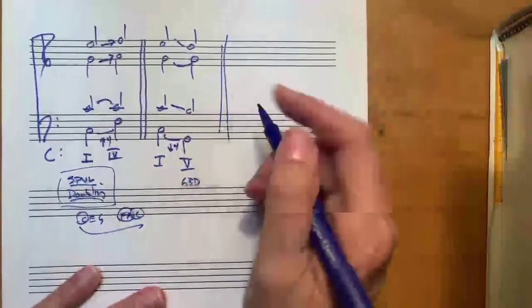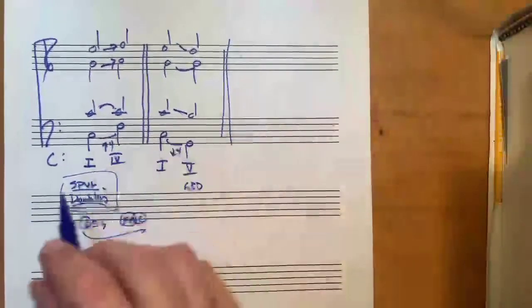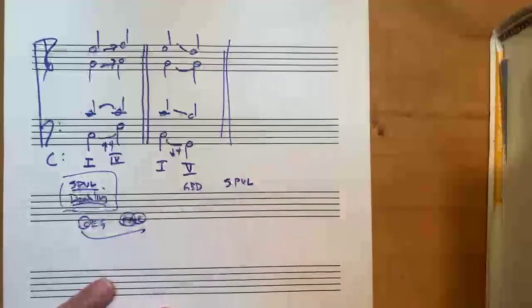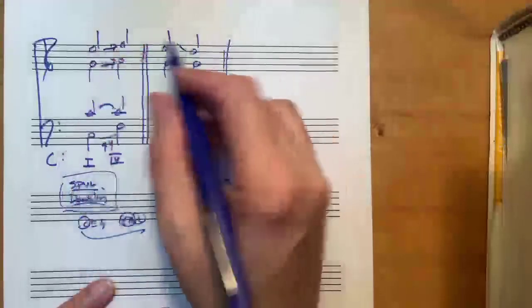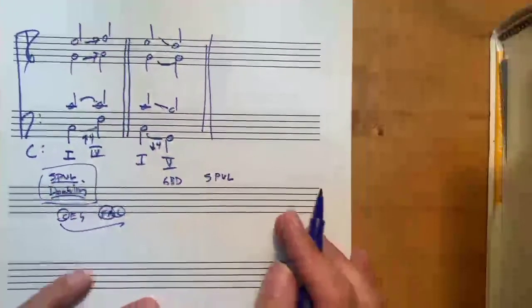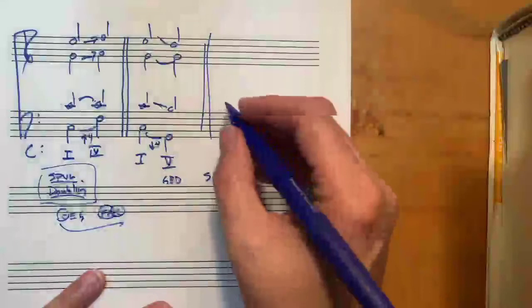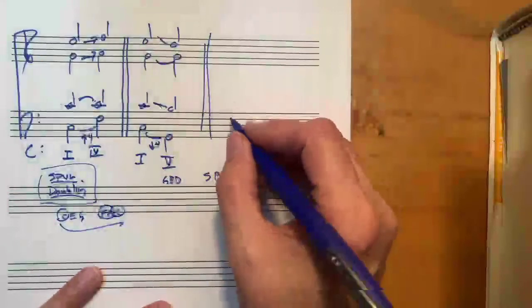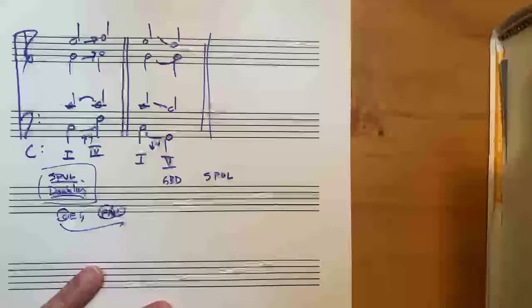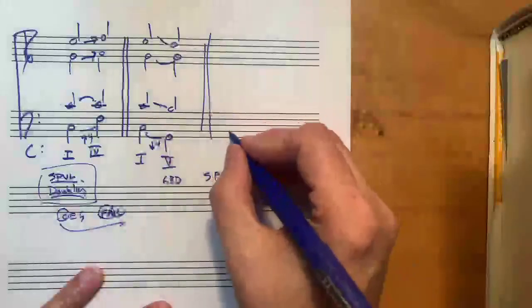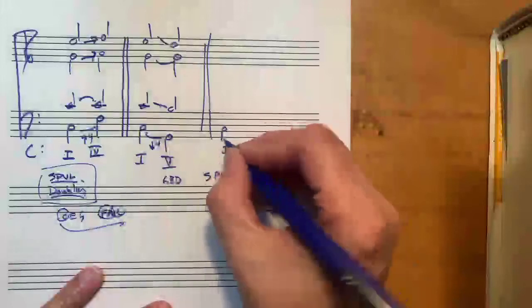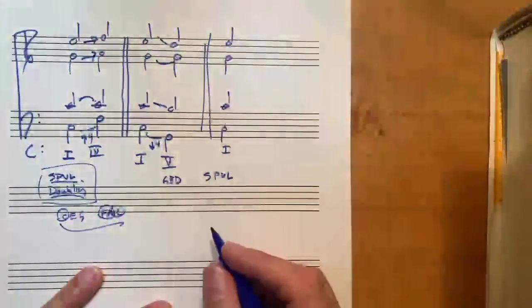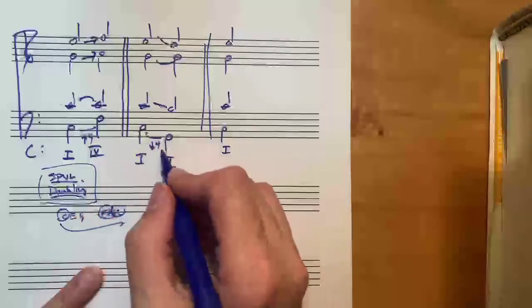Now, the smoothest possible voice leading for this progression involves a specific melody. I would like us to look at all of the possibilities of different melody notes. So let's imagine we have a one chord. Here's our one chord. And let's go to the V chord.